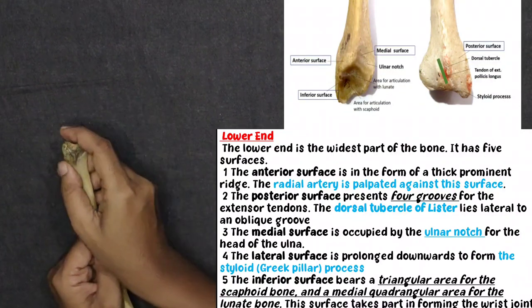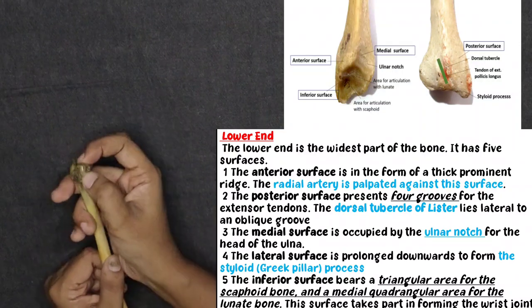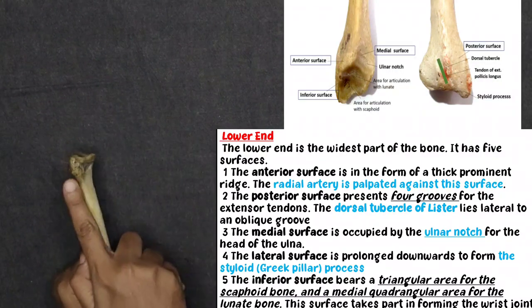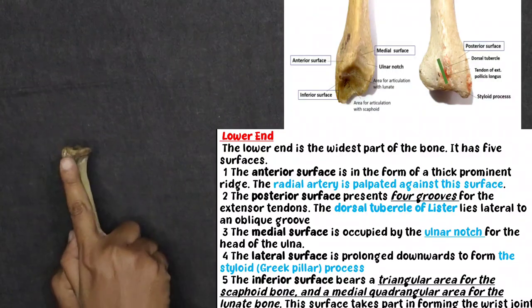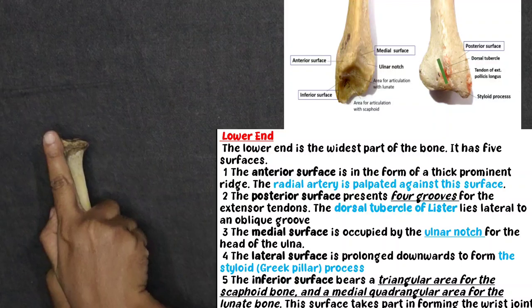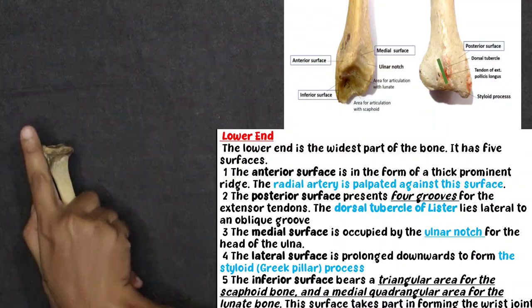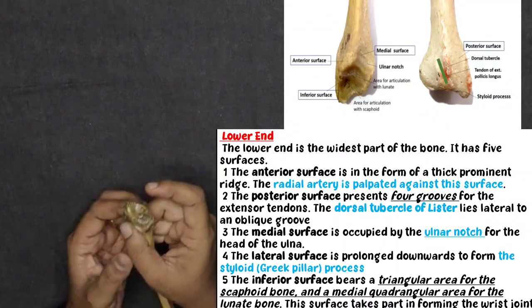On the lateral surface of the lower end, there is the styloid process — an extra projection, as mentioned in side determination.